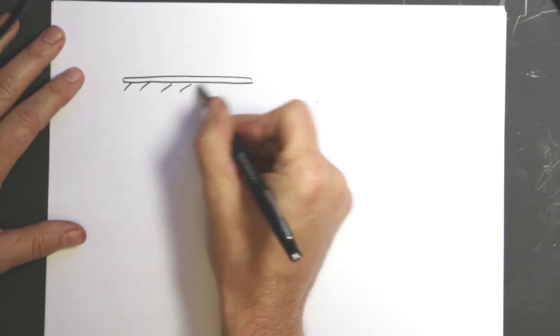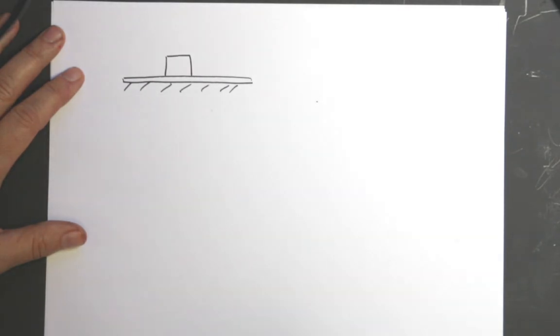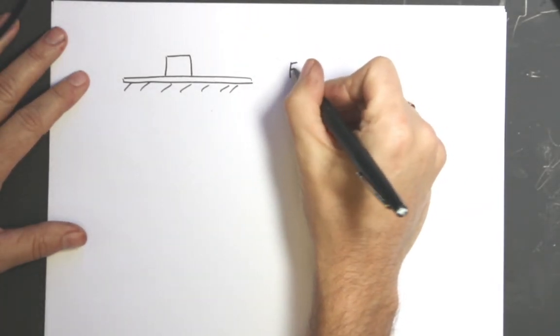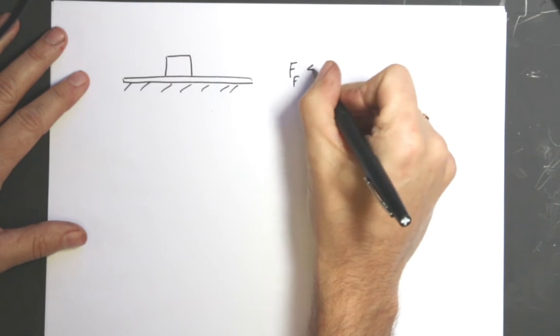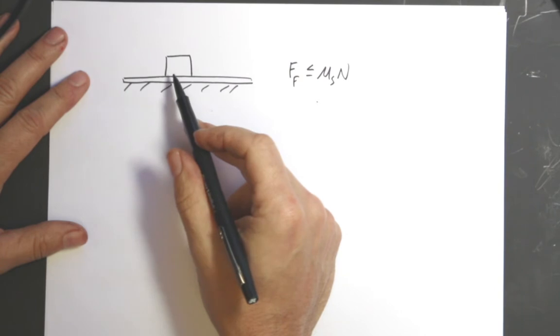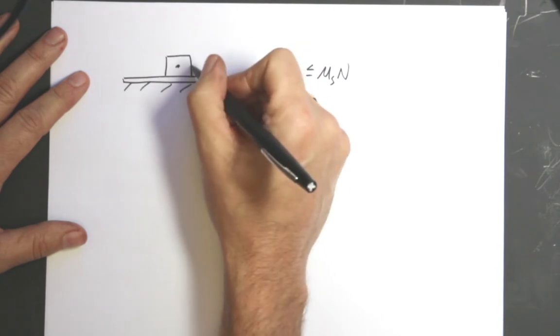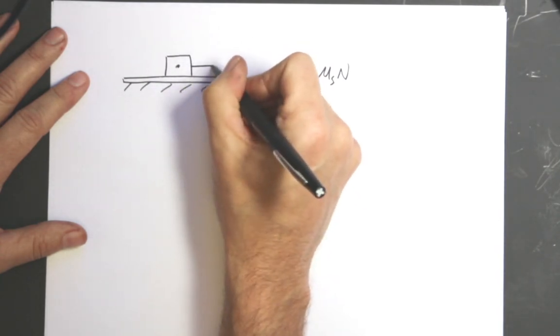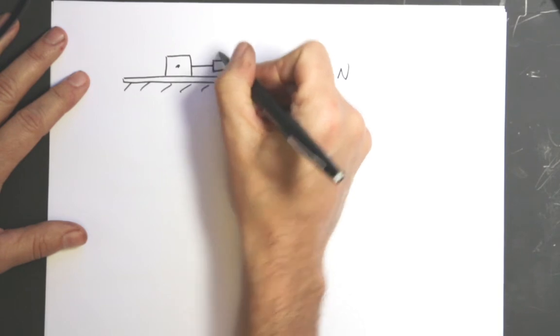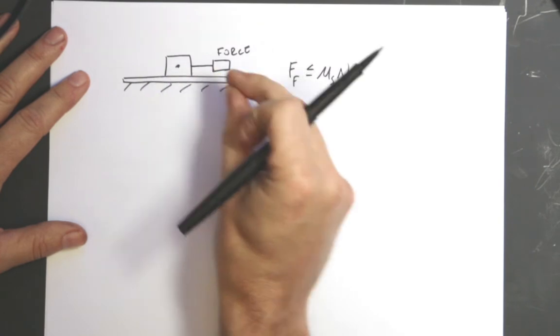Here's my board on a table and here's my block. If I want to find the coefficient of static friction, the normal model says that the frictional force is less than or equal to the coefficient of static friction times the normal force. If I set the block on the table and I pull it with a force scale, then I pull it until it just starts to move.